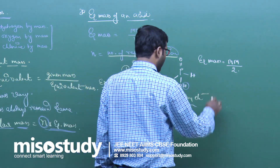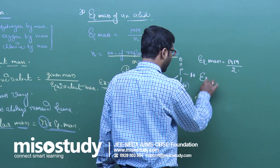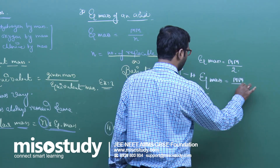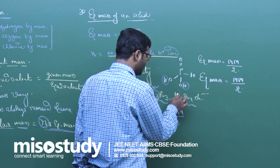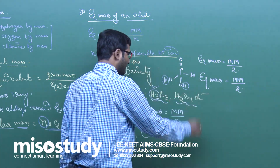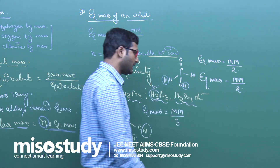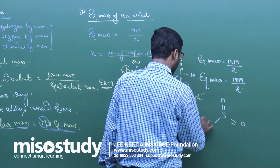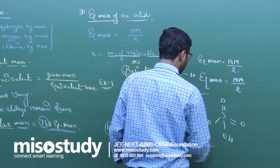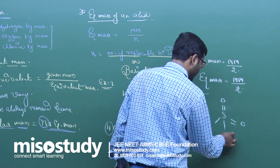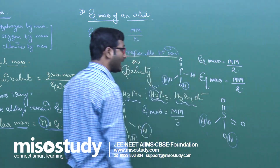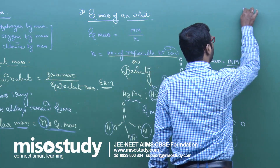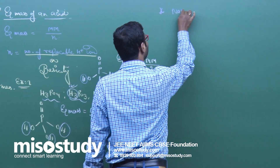Similarly, for H₂SO₄, we write equivalent mass = molecular mass of H₂SO₄ / 2, because in H₂SO₄ two hydrogens are directly attached to oxygen, giving two replaceable hydrogen ions.